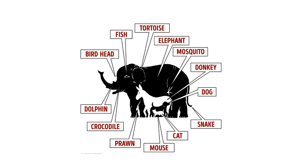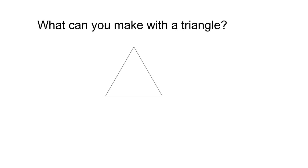Next is a snake, a cat, a mouse, a prawn which I missed - it's kind of like a shrimp - a crocodile, a dolphin, and ending with a bird head, which I also missed.